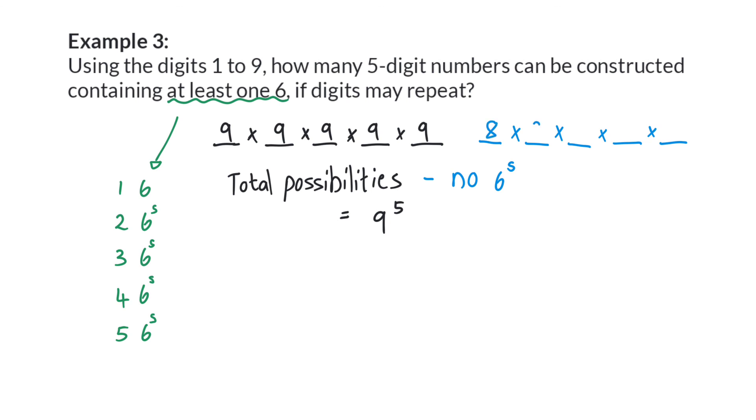Therefore, there will be 8 different options to choose from for each task. And that means the amount of numbers containing no 6s will be 8 to the power of 5. And therefore, there will be 26,281 different numbers that can be constructed containing at least one 6.